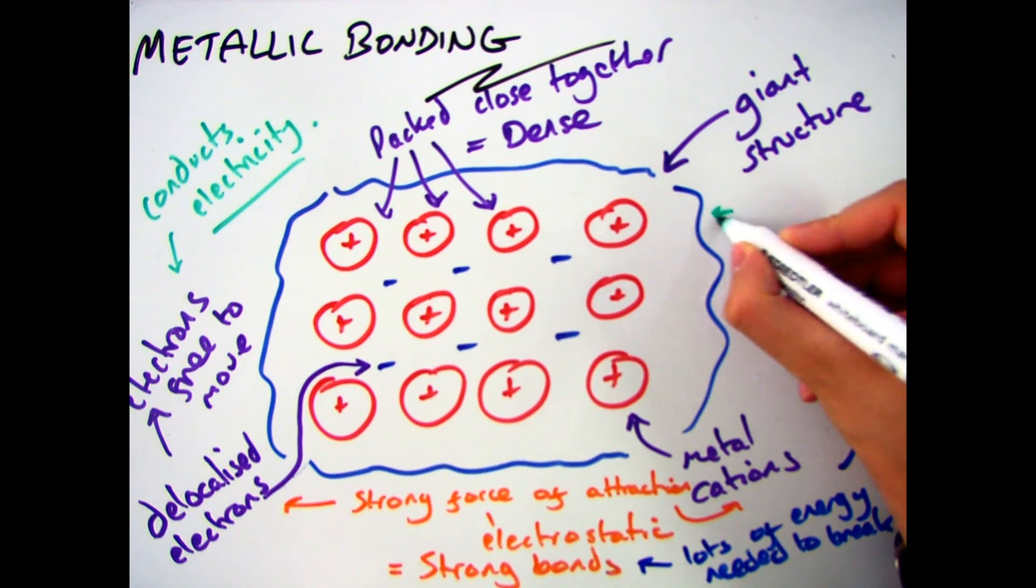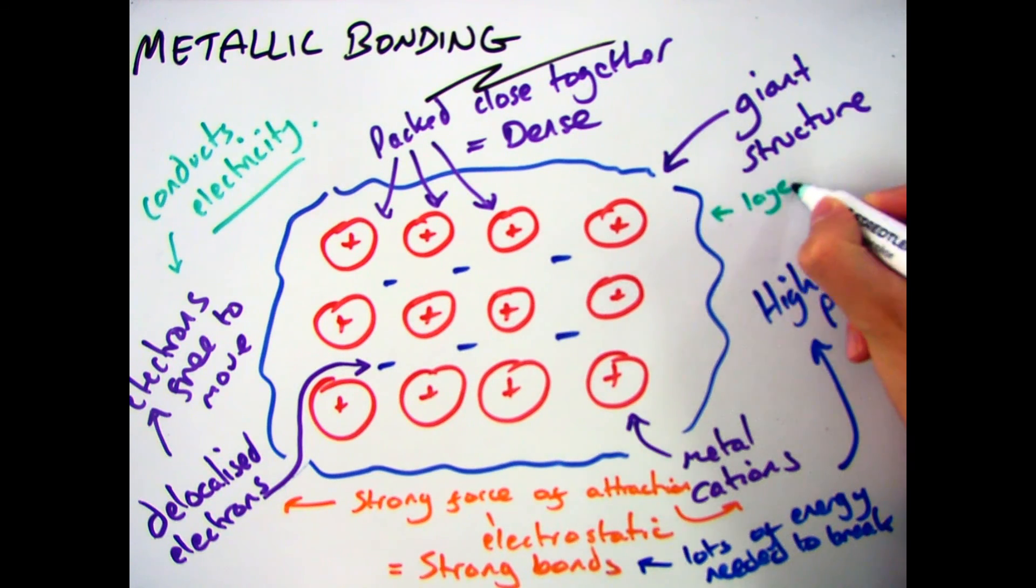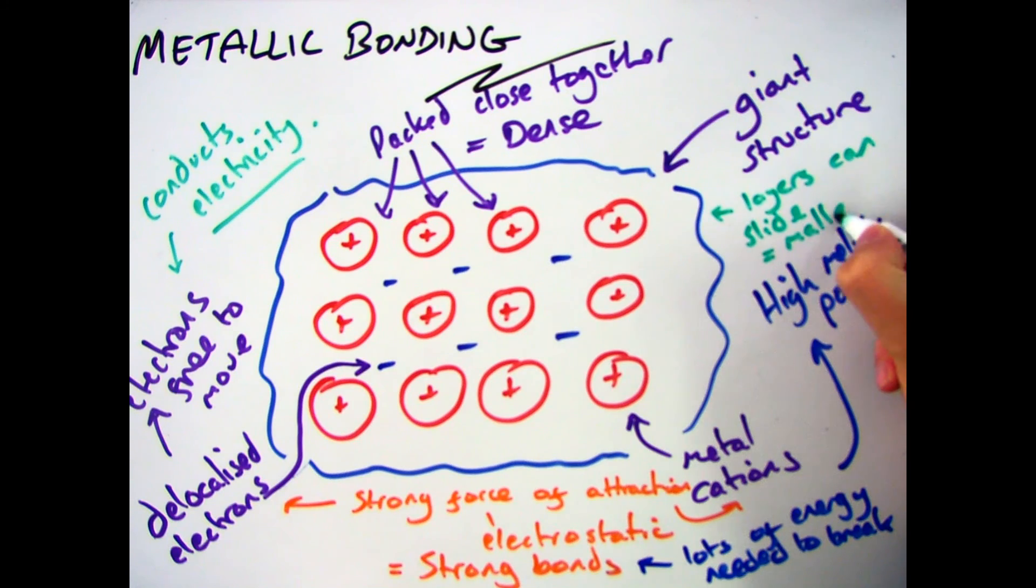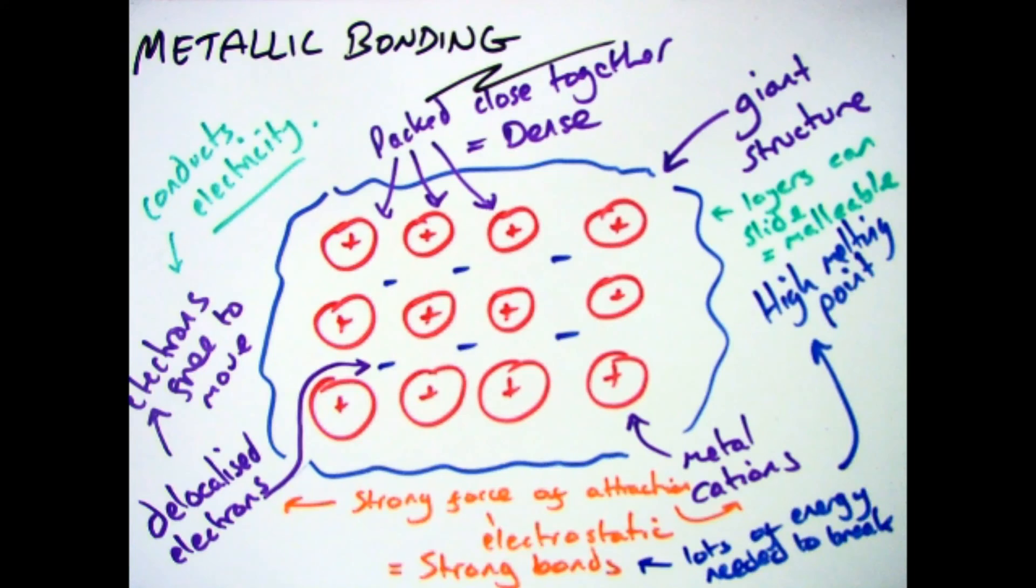Now the final property you do need to know about is why they are malleable and that is all down to the fact that they are in layers. And these layers can slide past each other. There is still a strong force of attraction between the delocalised electrons and the cations so it stays together which makes it malleable overall.